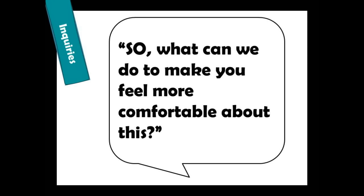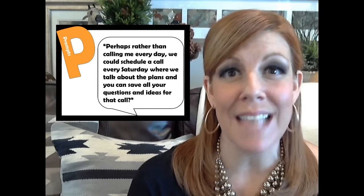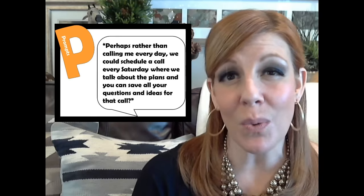When I ask my mom in the inquiry step 'what can we do to make you more comfortable about this?', she may come up with a solution that's completely agreeable and we're done. Or we might both get stumped, which is when it's time to move on to the prompt step. I might offer: 'How about we have a scheduled call once a week on Saturdays where we talk about all the plans, and you save all your questions for that call?' My mom might counter: 'One call a week isn't going to work — I need two.' I had already prepared myself to compromise, so we now have an agreement: two calls a week to discuss all our holiday questions and concerns.